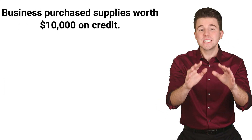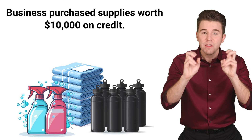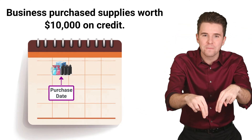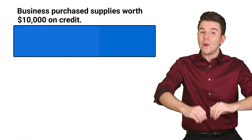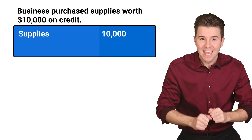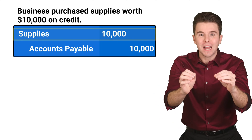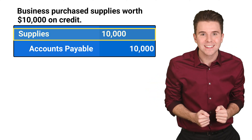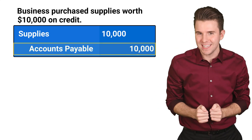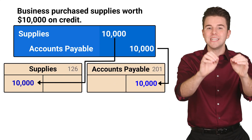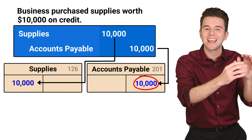Next, the business purchases $10,000 of fitness supplies on credit. This means that the supplies are received right now, but we will pay for them later. To record this entry, we debit supplies for $10,000 and credit accounts payable for $10,000. We debit supplies because debits increase assets. We credit accounts payable because credits increase liabilities. The $10,000 being posted to accounts payable reminds us that we have to pay the supplier in the future.